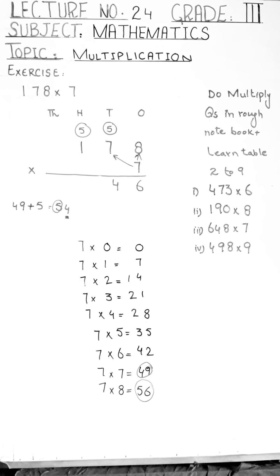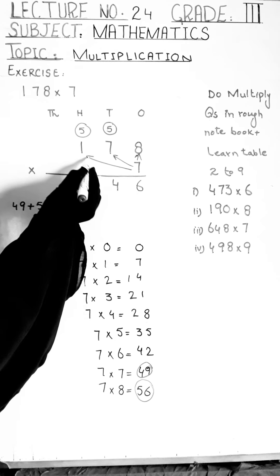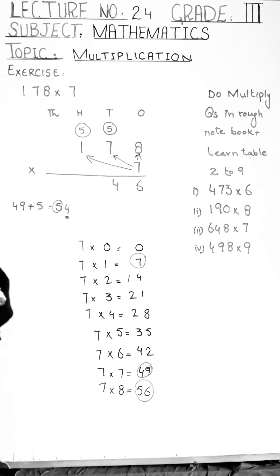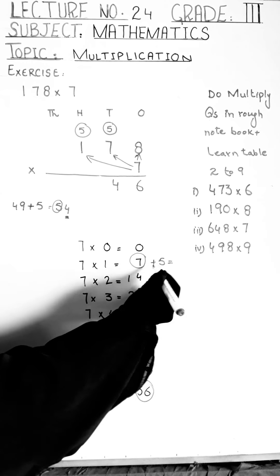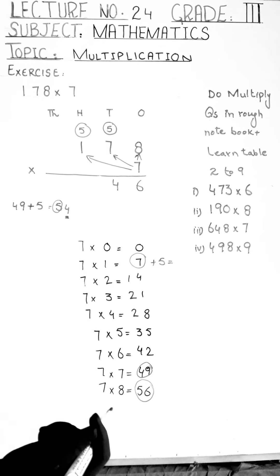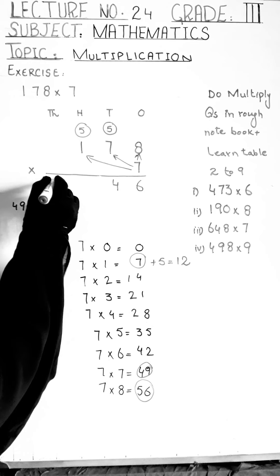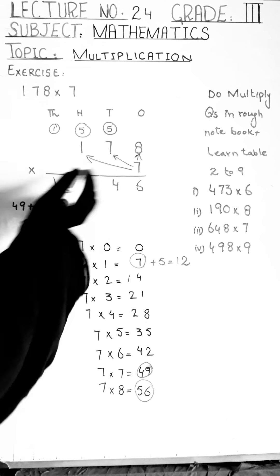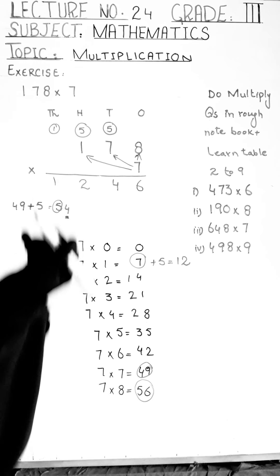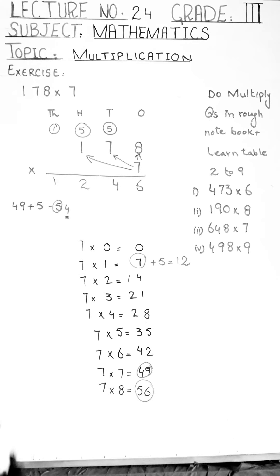Again, five is the carry. We read the table of seven up to one — seven ones are seven. We simply add five to seven: eight, nine, ten, eleven, twelve. The answer is twelve. There is no digit in the thousands column, so we write twelve directly. When we multiply one hundred seventy-eight by seven, the answer — the product — is one thousand two hundred and forty-six.